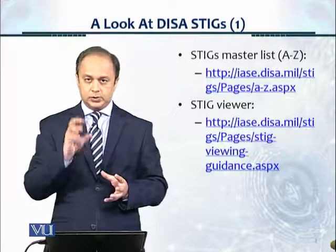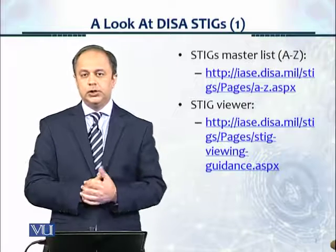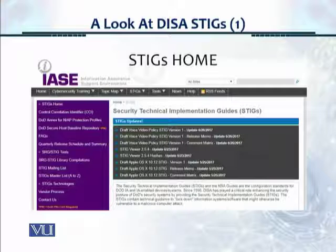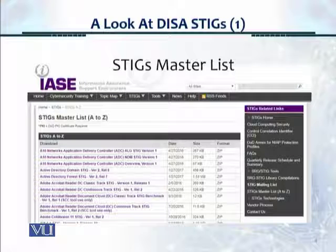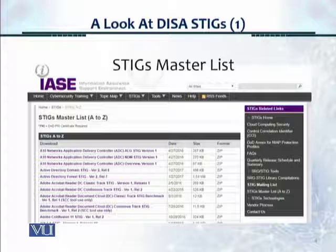In order to operate the STIGs — to look at them, to mark them — they have a checklist, and you can go to the URL I'll show you. This screen shows the STIGs home. The important drop-down menu says STIGs in the middle at the top, on the right of Topic Map and on the left of Tools. The STIGs master list shows entries like Adobe Acrobat, Active Directory, and A10 Networks STIGs. You can download individual STIGs or collect the entire library.